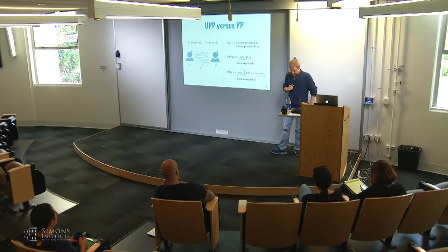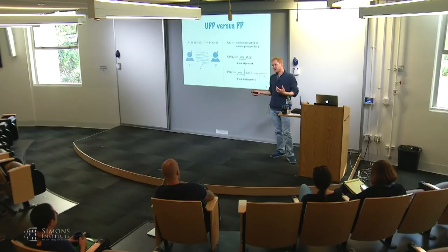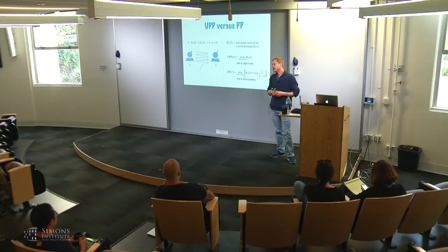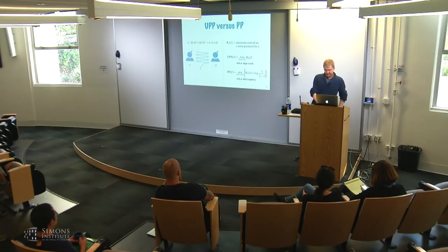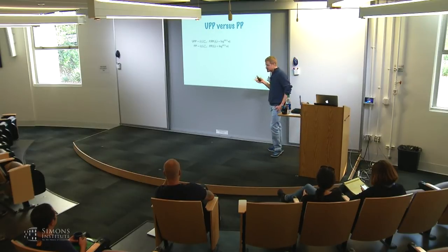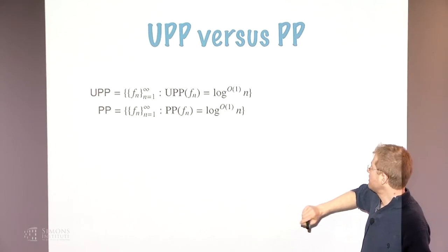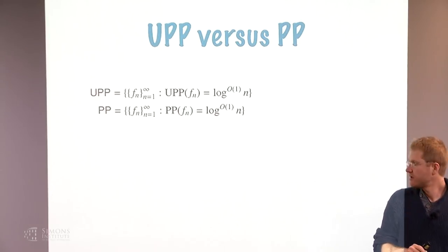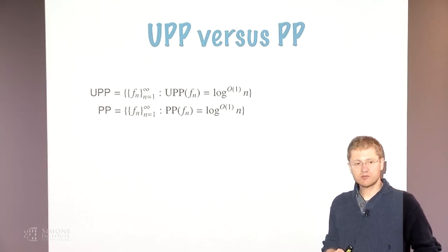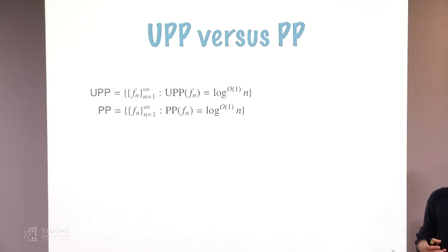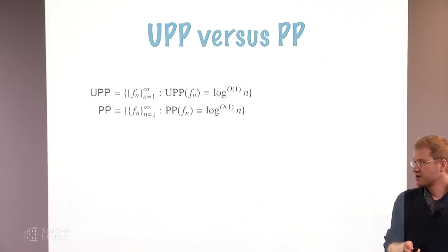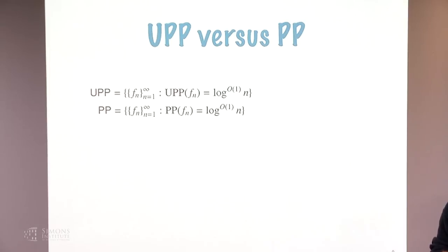These two notions are extensively studied, with sturdy bridges connecting communication complexity to Banach space theory, algebraic geometry, learning theory, and combinatorics. Once you have defined two complexity measures, you can consider the corresponding complexity classes: UPP is the set of communication problems whose unbounded error communication complexity is polylogarithmic in N, and PP is the set whose weakly unbounded error communication complexity is polylogarithmic in N.